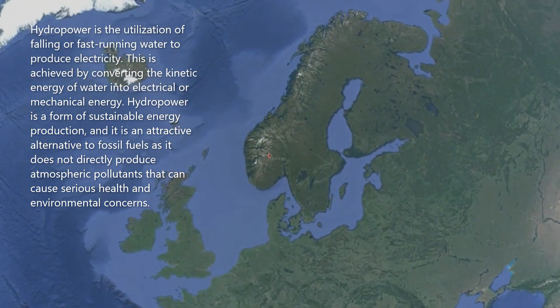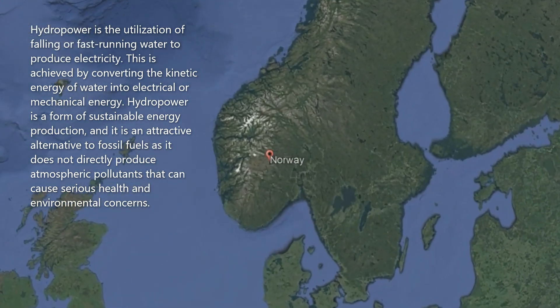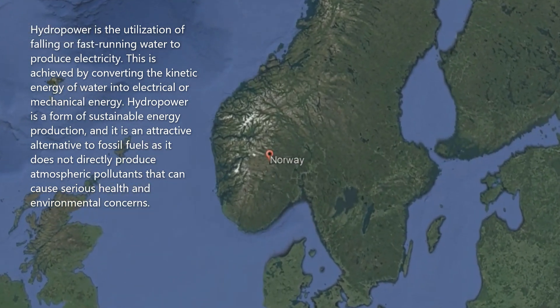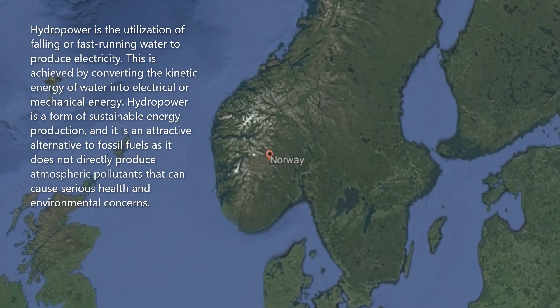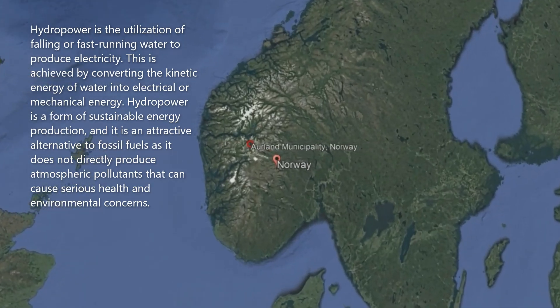Hydropower is the utilization of falling or fast running water to produce electricity. This is achieved by converting the kinetic energy of water into electrical or mechanical energy.